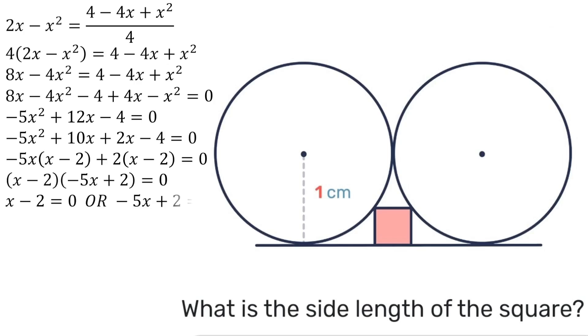So it looks like we can have two answers but not quite. x equals 2 cannot work because the entire distance from the center of the circle on the left to the center of the circle on the right is 2 and the square can't be that. It's obviously smaller. So that answer doesn't work. It has to be 2 fifths. That's the answer.